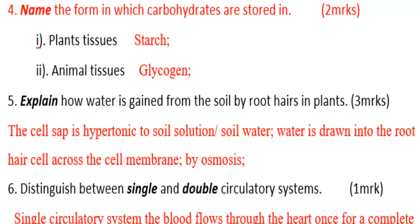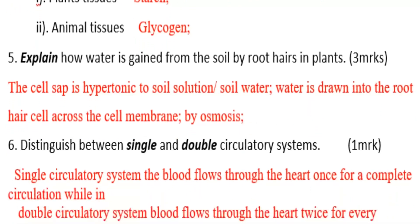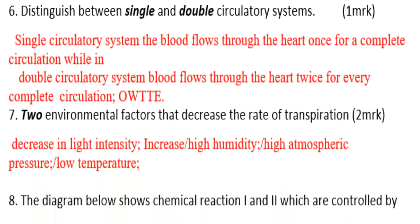Distinguish between single and double circulatory systems. In a single circulatory system, blood flows through the heart once for a complete circulation, while in a double circulatory system, blood flows through the heart twice for every complete circulation.